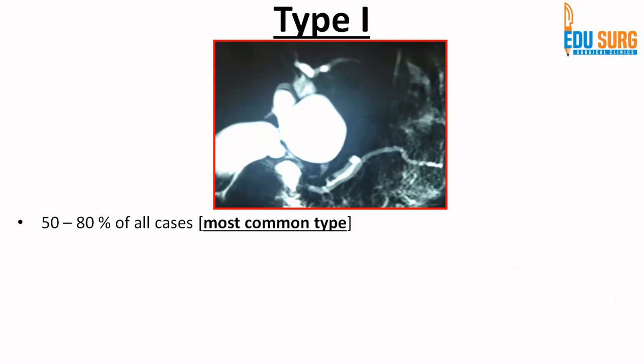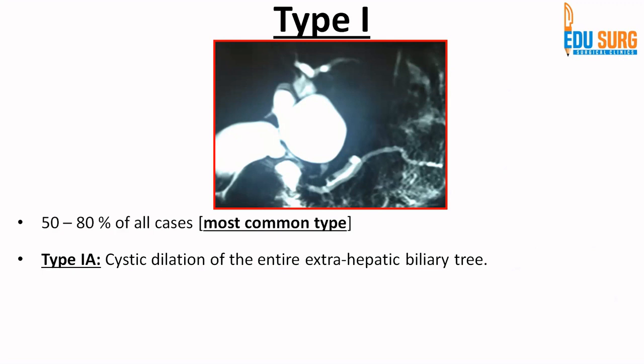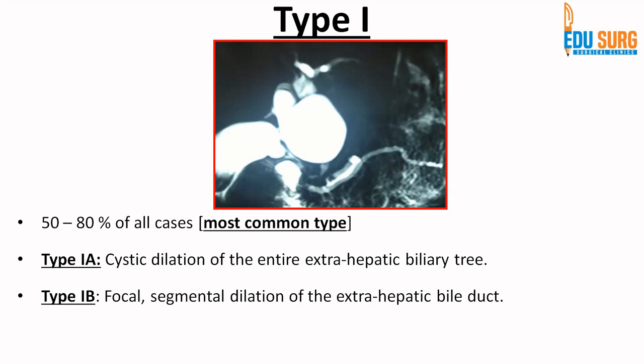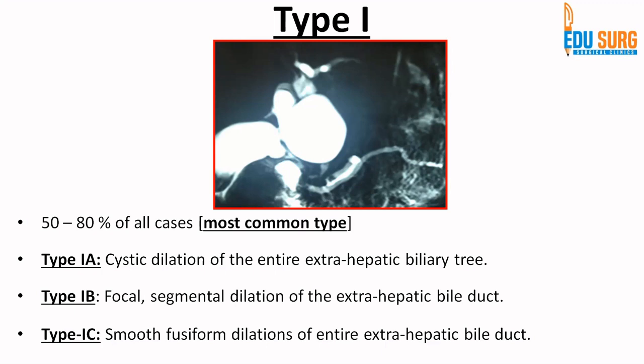Type 1 is the most common type, accounting for 50 to 80% of all clinical cases. Among type 1 there are three subclasses. Type 1A is cystic dilatation of the entire extrahepatic biliary tree. Type 1B is focal segmental dilatation of the extrahepatic biliary tree. Type 1C is again entire, but smooth fusiform dilatation. So 1A and 1C are entire, while 1A is cystic and 1C is fusiform. Type 1 affects only the extrahepatic bile duct.